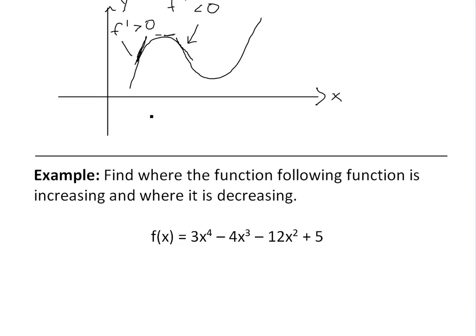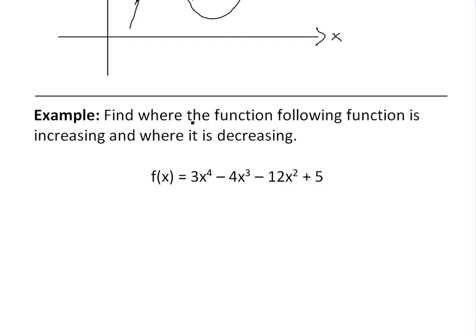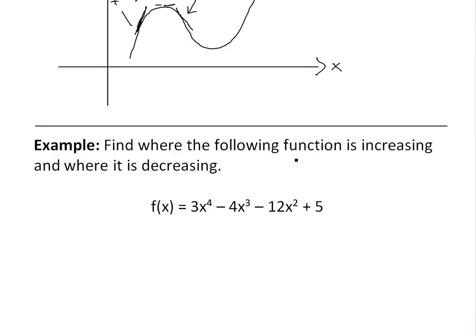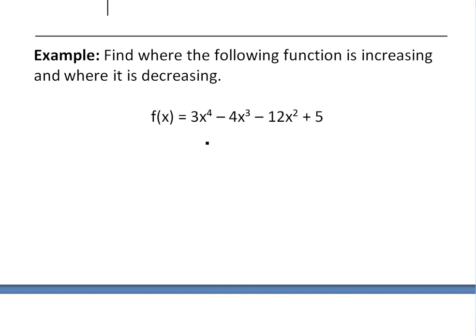So now we'll go over this example, which asks us to find where the following function is increasing and where it is decreasing. The function is f of x equals 3x to the power of 4 minus 4x cubed minus 12x squared plus 5.